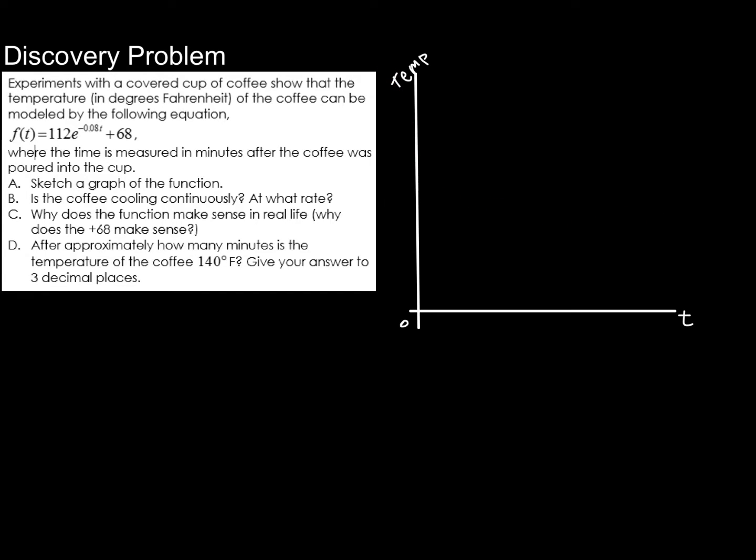So that allows us to draw our horizontal asymptote at 68, and then we can find a couple of points, starting with the y-intercept, and use that to sketch the graph. So I'm going to go ahead and do that now, and if you haven't done so, you should do so as well.